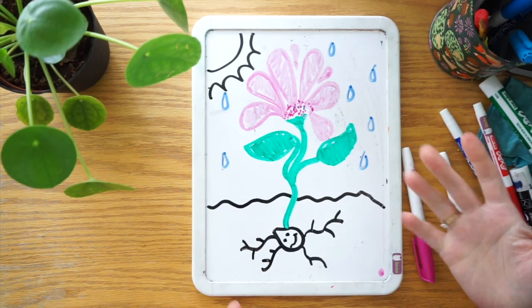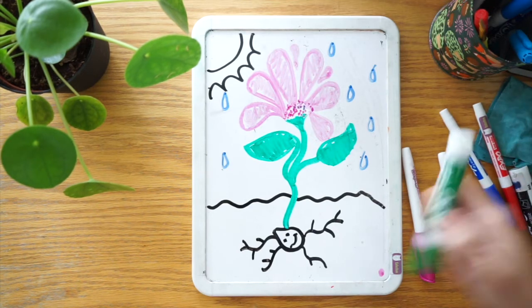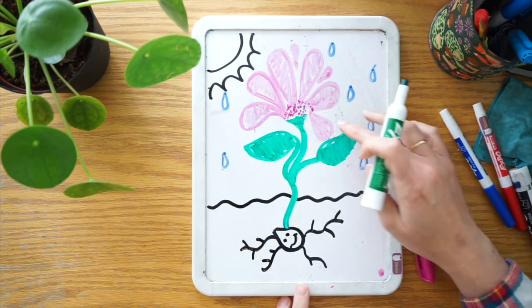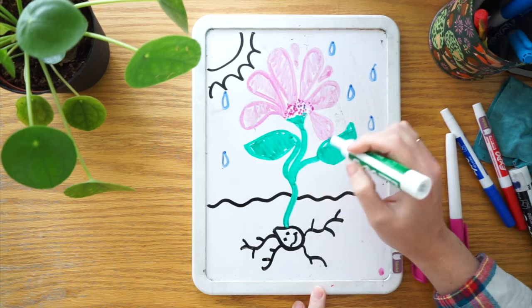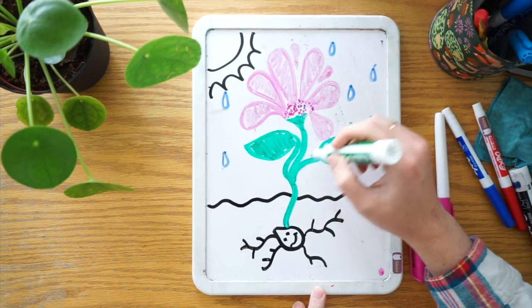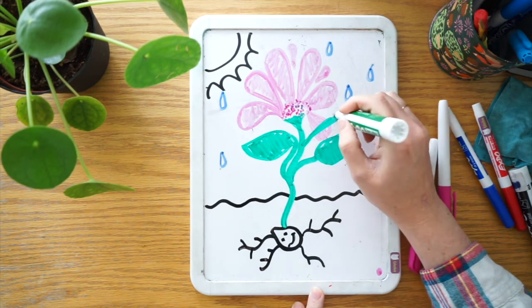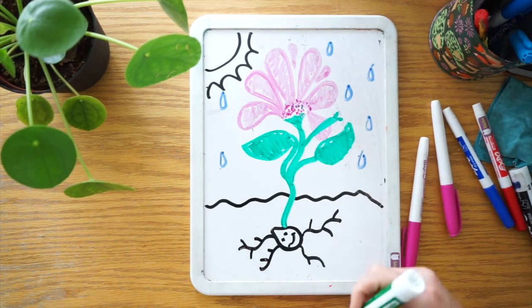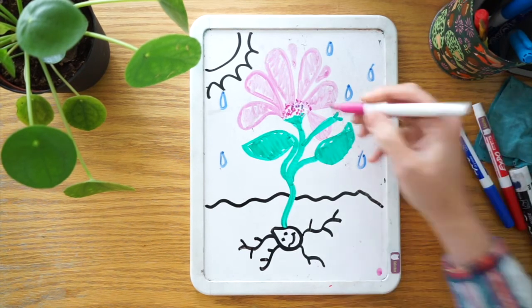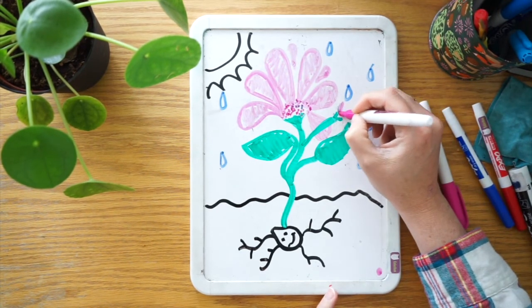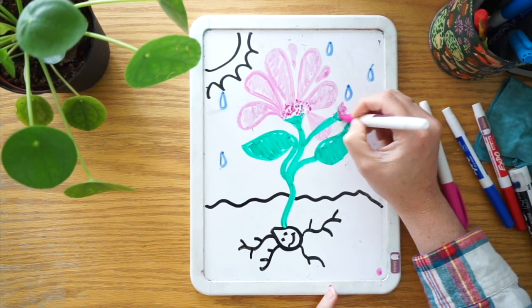Great job guys! And if your plant is really, really healthy, maybe it even has another little stem where you might see a smaller version of the flower just starting to grow. That's called a bud.